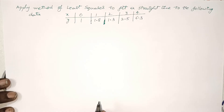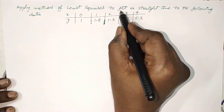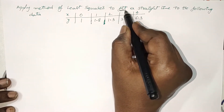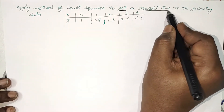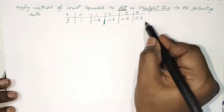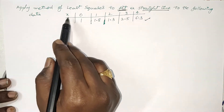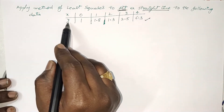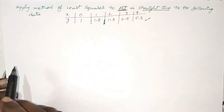Hi everyone, welcome back to our channel. In this video, I would like to explain how to fit a straight line. Fitting means finding the equation of a straight line for the given data which has x and y values, by using the method of least squares.